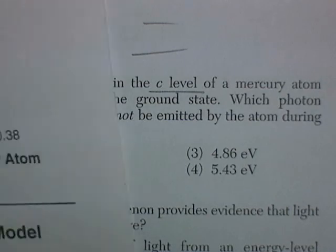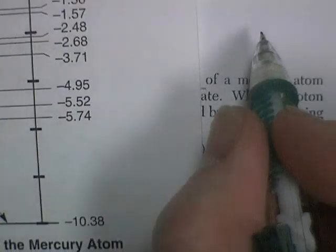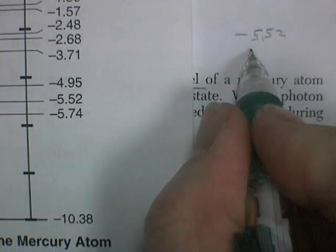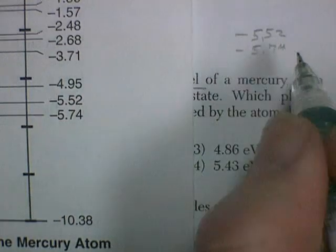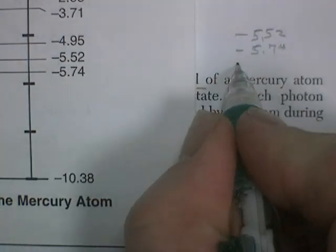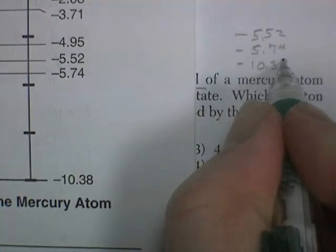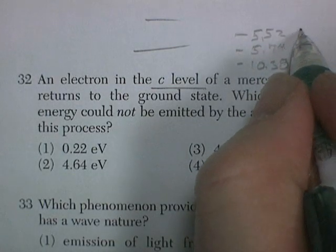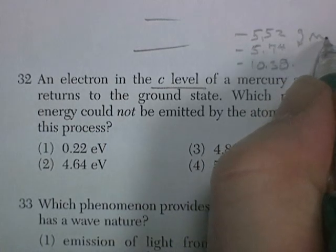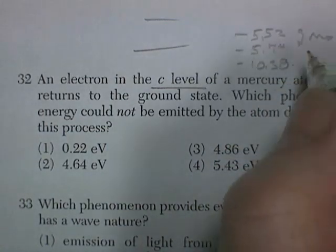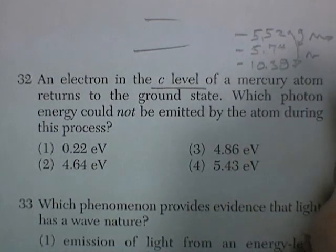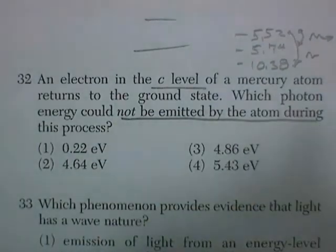Which photon energy could not be emitted? The C state is 5.52 eV, the B state is 5.74 eV, and the ground state — the A state — is 10.38 eV. As the electron goes from C to B it could release a bit of energy, and from B to A it could release some energy.